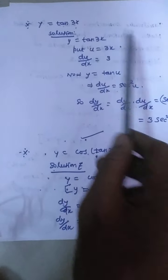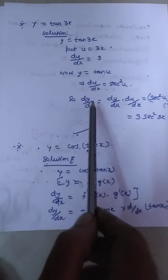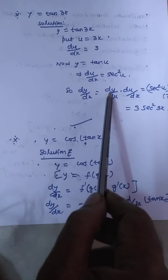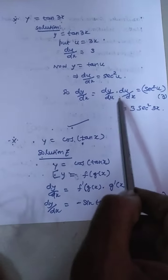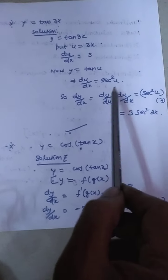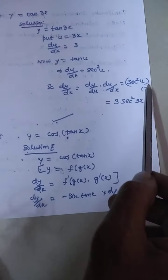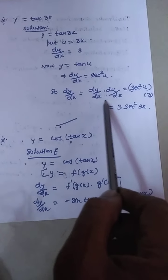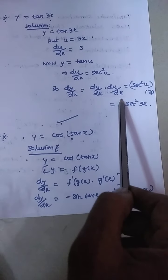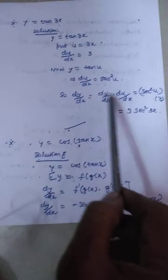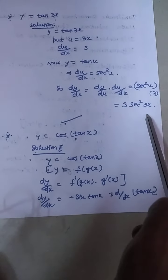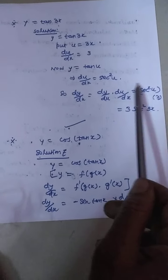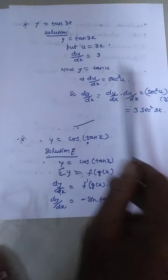By the chain rule, dy/dx = dy/du · du/dx = sec²(u) · du/dx. Substituting back, du/dx = 3 and u = 3x, so dy/dx = 3·sec²(3x).